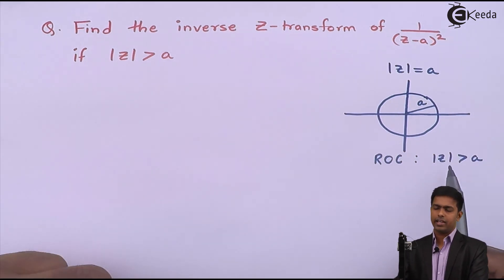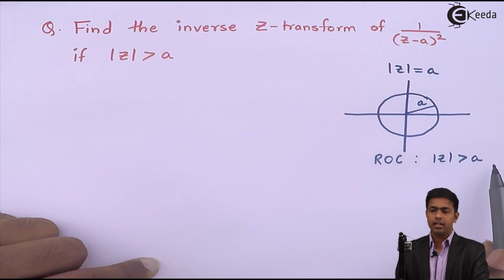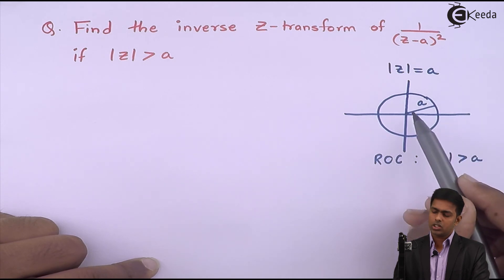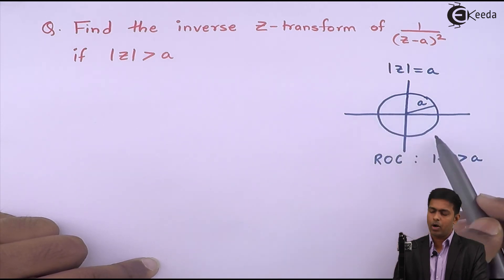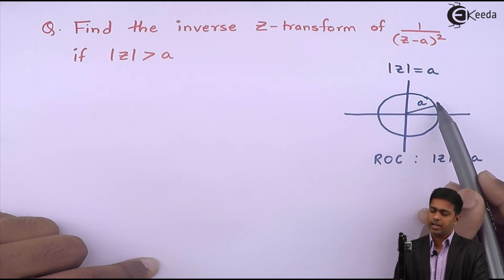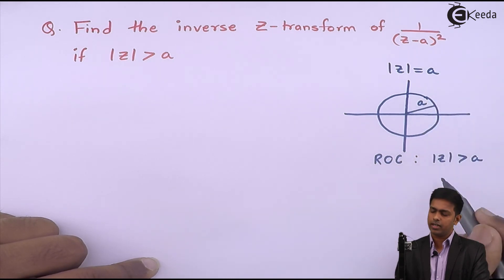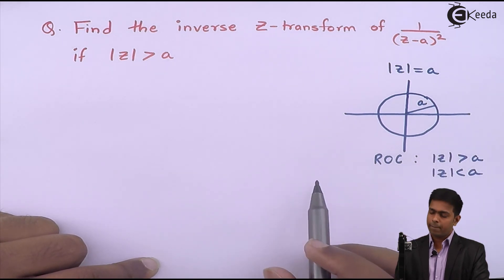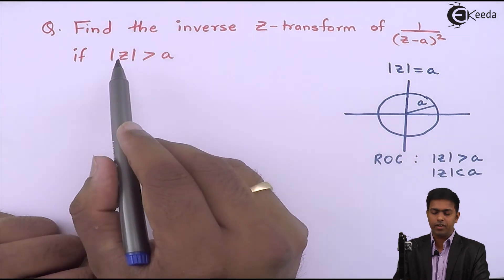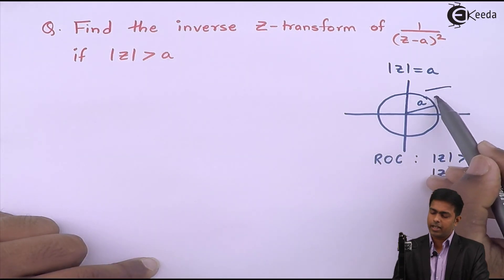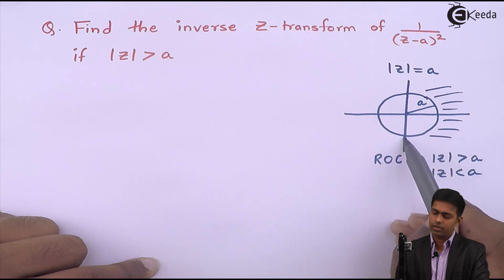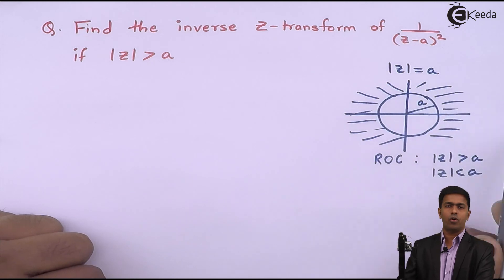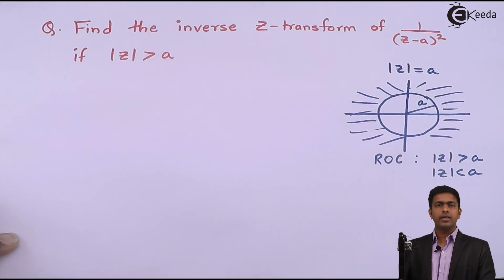If I want to draw the area where mod Z is greater than A, you will find that this area is nothing but the area outside the circle — because till the circle boundary we get mod Z equal to A, and inside the circle mod Z is less than A since the radius there is less than A. So this area, mod Z greater than A, is the area outside the circle, and this is the region of convergence for which we have to find the sequence.